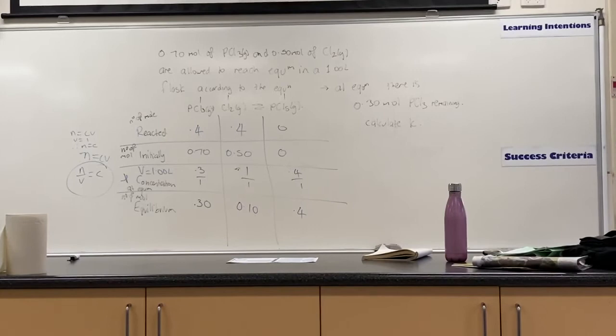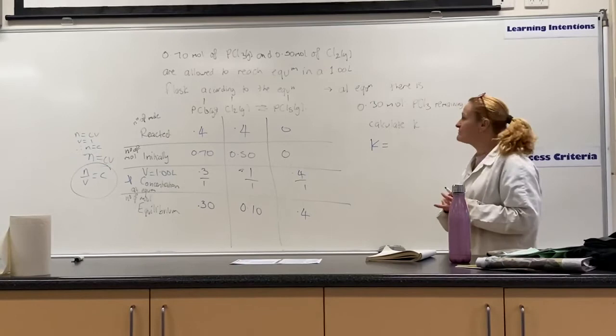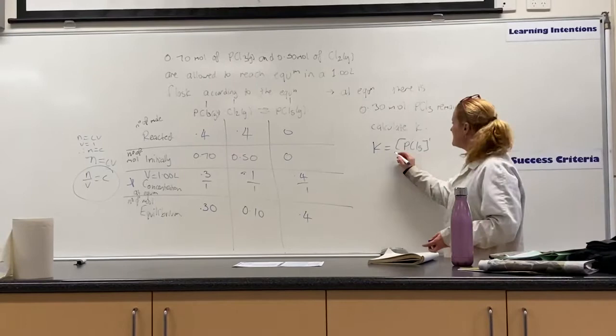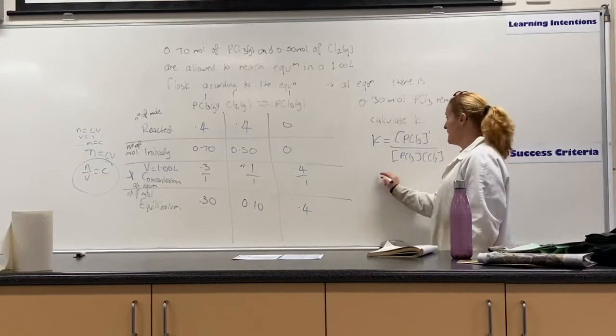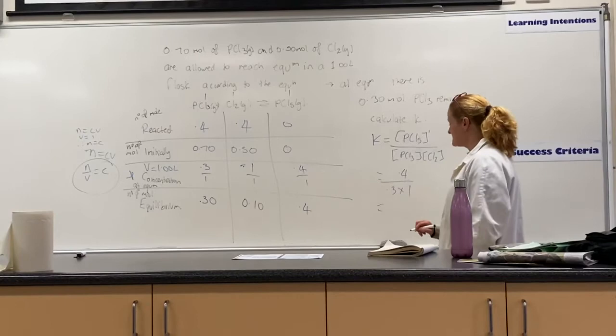So we come over to here. We've got to get K. First thing to do is get the expression. Now some of you guys should be able to tell me what will go on the top line of the expression, Brodie. The product, so the concentration of PCl5. Because there's only one of them, it's to the power of 1 which we don't normally write. And on the bottom line of that will be, yeah, the reactant, so PCl3 times the Cl2. And we've got those concentrations on the top line. Our PCl5's concentration is 0.4 divided by 0.3 times 0.1. And that's going to equal 0.4 - 0.4 - 0.3 - 0.3 - 0.3. Is that right?